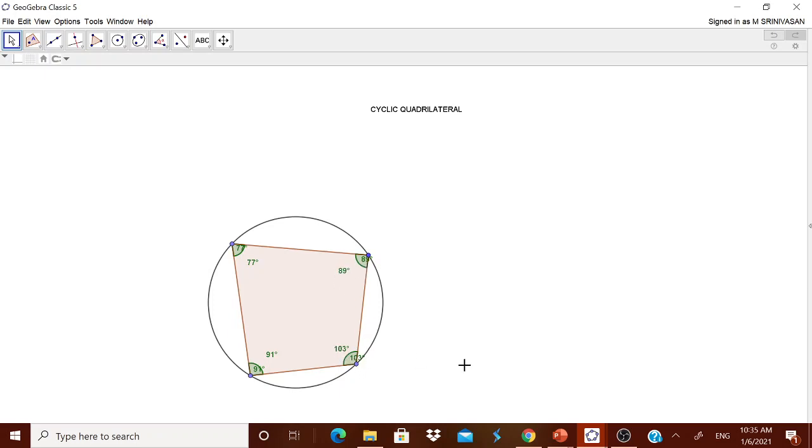91 plus 89, 77 plus 103 is equal to 180 degrees. Now how to save this cyclic quadrilateral file? It is very simple.